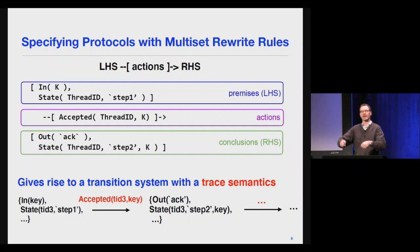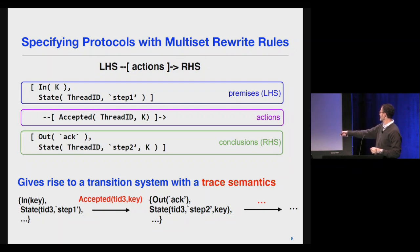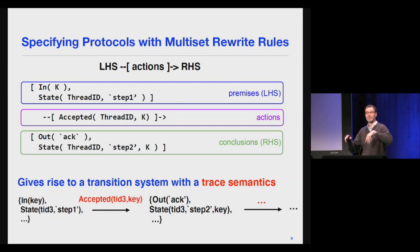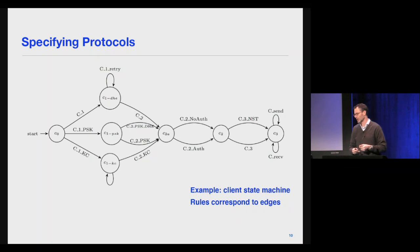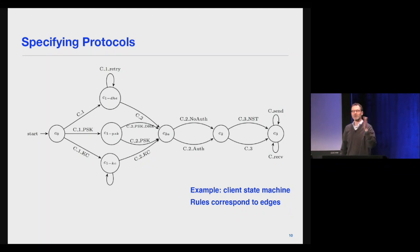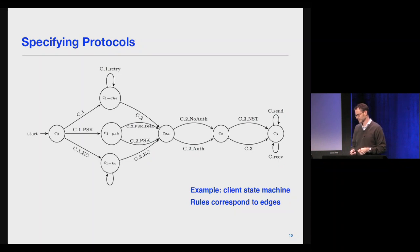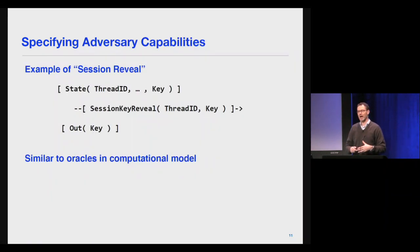Traces are important because we specify properties over them — for example, 'somebody has accepted a key and the adversary doesn't know it.' In general, protocols have multiple rules for multiple roles: an initiator role, a responder role, a key server role. This is an example of the client state machine for TLS 1.3 — for each arrow in the automaton we would have a multi-set rewriting rule. So in general you'll have quite a lot of multi-set rewriting rules for complicated protocols.